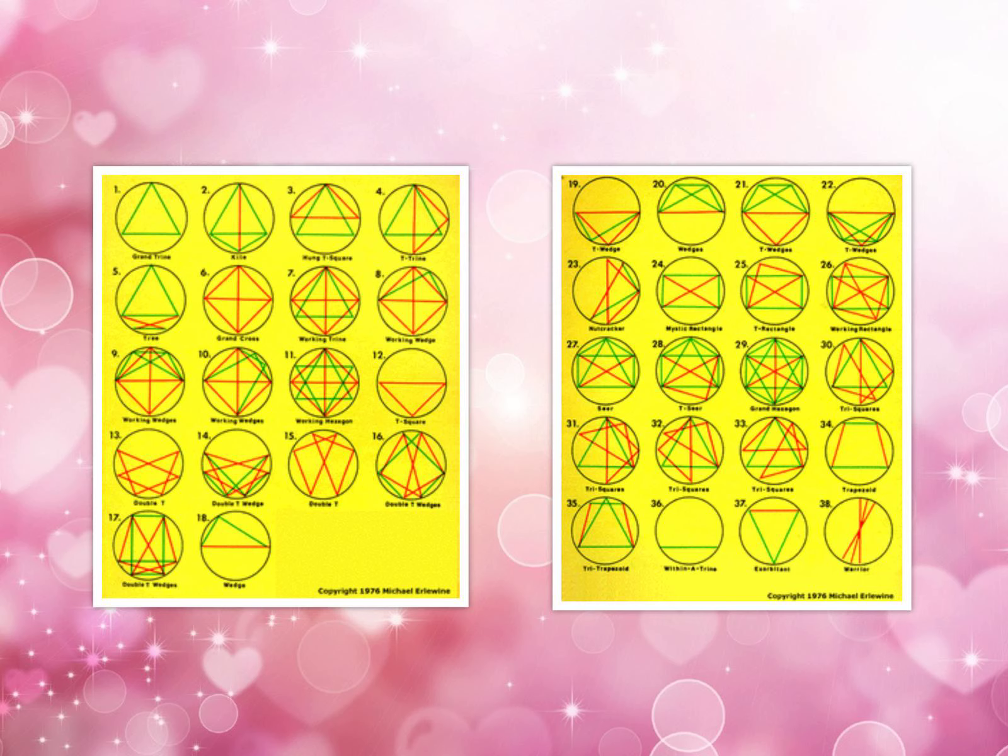The more negative effect of a closed pattern formed in synastry is that the completed structure, hence the relationship, is hard to break. It is somehow unavoidable, magnetic.